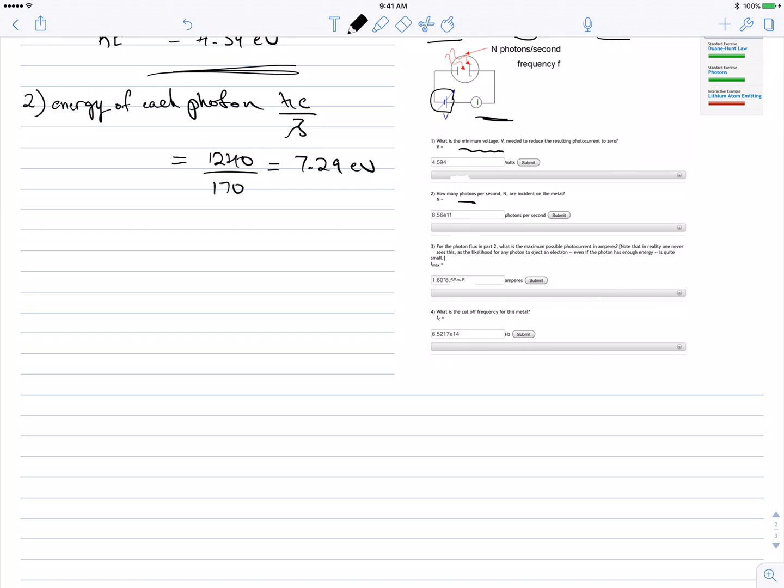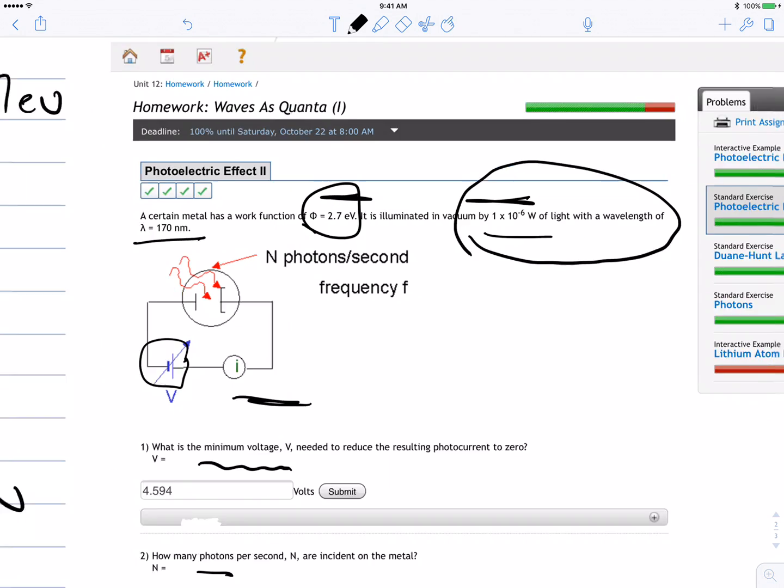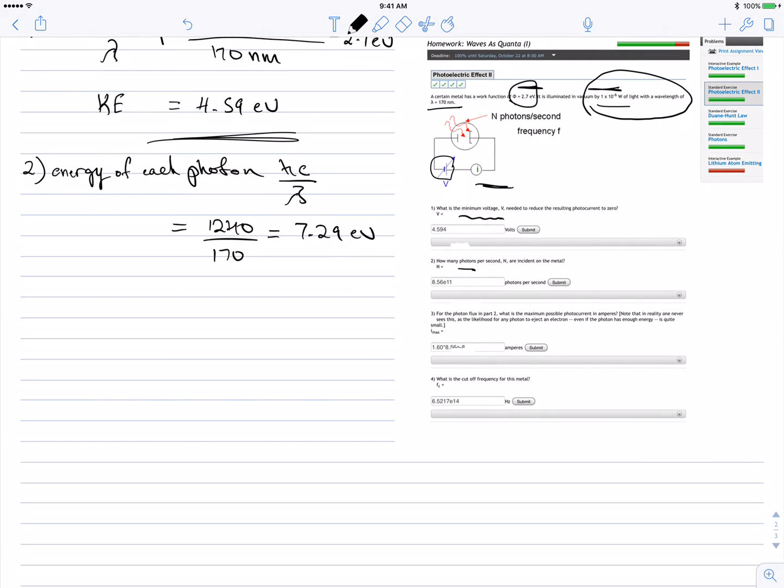They told us the total is 1 times 10 to the negative 6 watts. So we have the total coming in, which is 1 times 10 to the negative 6 joules per second, and we divide that by the energy of each photon, 7.29 electron volts. Before we do that, we need to change this to joules.